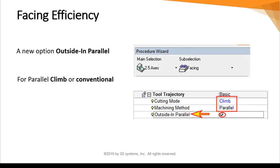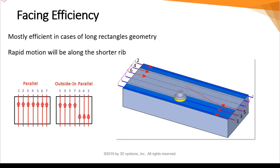I will start with a new option in the existing procedure facing: outside-in parallel. This new option is available for machining method parallel, and it makes sense for climb or conventional milling only. This new option is mostly efficient in cases of long rectangle geometry. A rapid motion will be along the shorter rib. The order of the sidesteps is now different — it goes from side to side instead of one after each other.